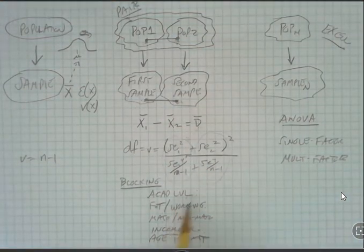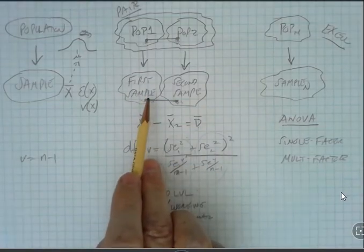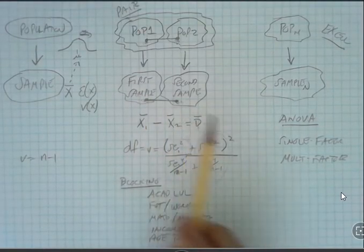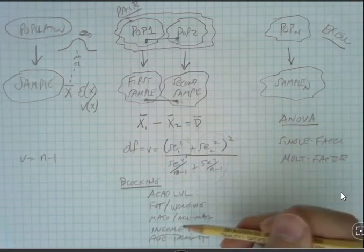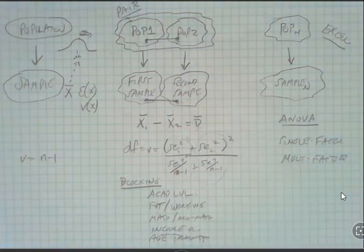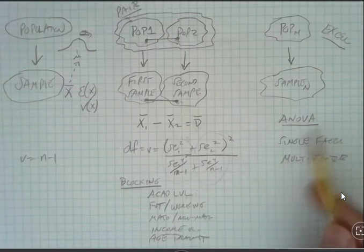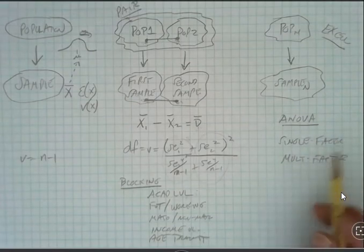I could have done the hypothesis test based on samples looking at differences in age and made which type of class a blocking factor. But over here I'm really only looking at one factor at a time. Over here in ANOVA I can look across all the different factors and find out what's important.